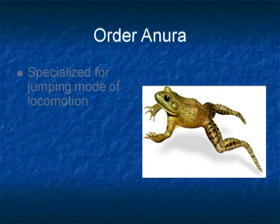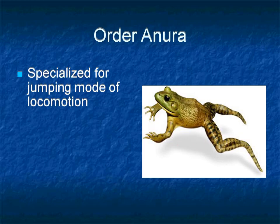The alternative name for Order Anura is Salentia, which means leaping. The name is suggested because frogs and toads are specialized for a jumping mode of locomotion, and thus by jumping they move from one place to another.